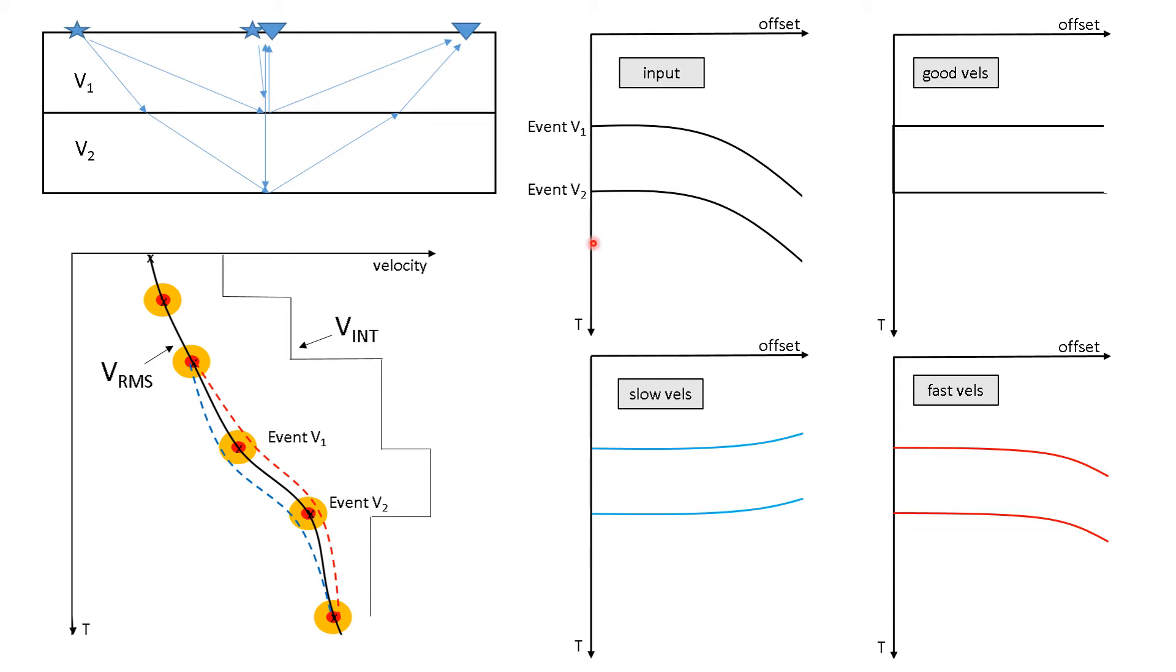Data sorted like this with time going down, offset to the right. At farther offsets it takes longer for the reflection to the event at V1, longer for the reflection to the event at V2, just because of the farther distance.